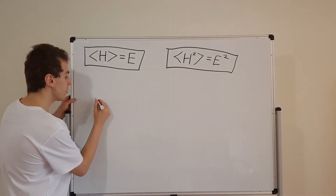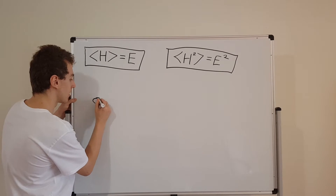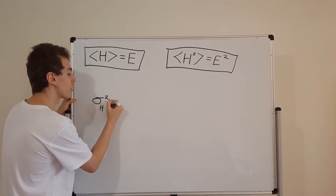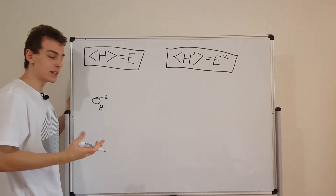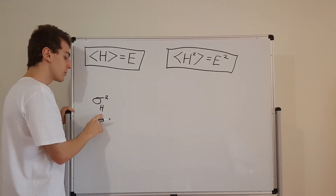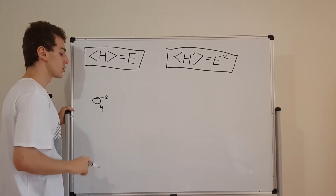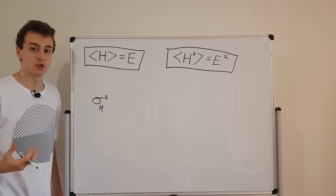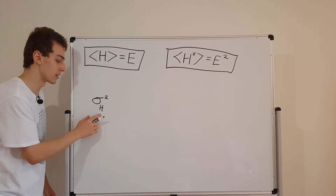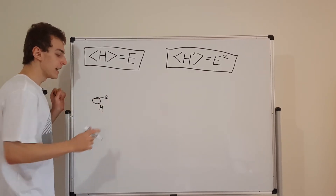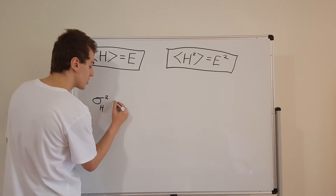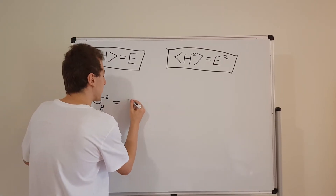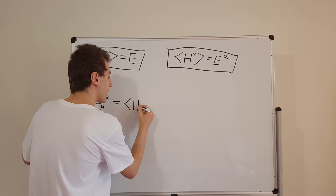So the variance of the Hamiltonian is sigma squared. Sigma squared is the variance, and this little H subscript refers to the variable that we're concerned with. So this quantity is equivalent to the expectation of the square...